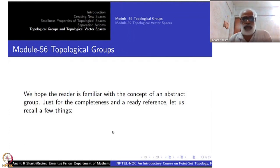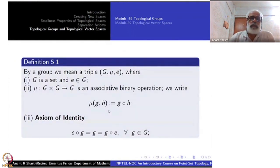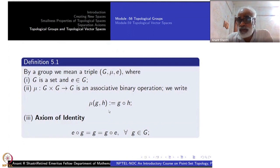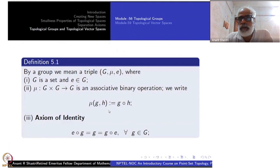You may treat a group as an ordered triple (G, μ, e), where G is a set, μ is a binary operation from G × G to G, and e is a distinguished element. The binary operation is associative, and using short notation we write μ(g, h) as g ∘ h, meaning g and h are elements of G and g ∘ h is also inside G.